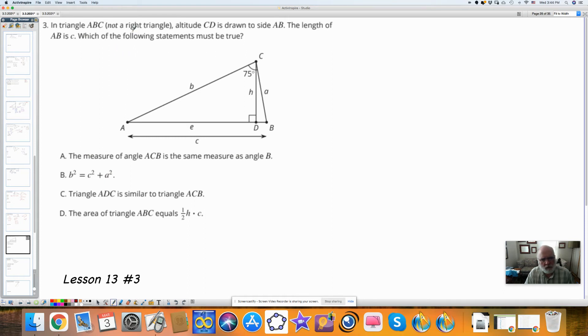In triangle ABC, ABC, not a right triangle, the altitude is drawn. The length of AB is C. Which of the following must be true? The measure of angle ACB is the same as the measure of angle B. And that doesn't have to be true. How about B squared is equal to C squared, this whole thing, plus A squared. That doesn't make sense either.